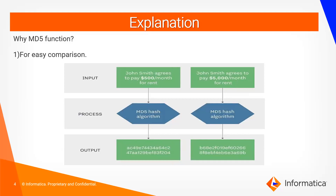The MD5 function generates a 32-bit hexadecimal value for the target record and also for the source record. If we compare those two hexadecimal values and they are equal, we can say these two values are the same and simply neglect the source record. If the two hexadecimal values are unequal, we can simply load the source record into the target.